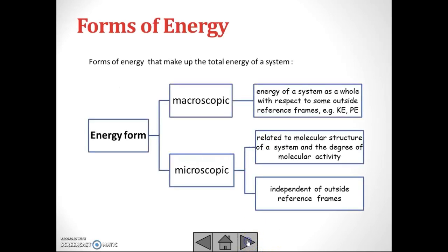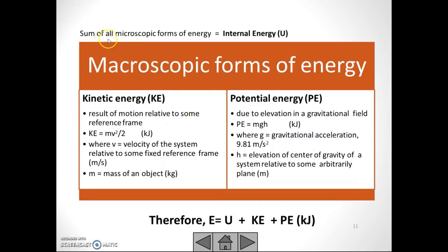Forms of energy are divided into macroscopic and microscopic. Macroscopic energy is the energy of a system as a whole with respect to some outside reference frame, such as kinetic energy and potential energy. Microscopic energy is related to the molecular structure of a system and the degree of molecular activity, independent of outside reference frames. The sum of all microscopic forms of energy equals internal energy, denoted by capital U.